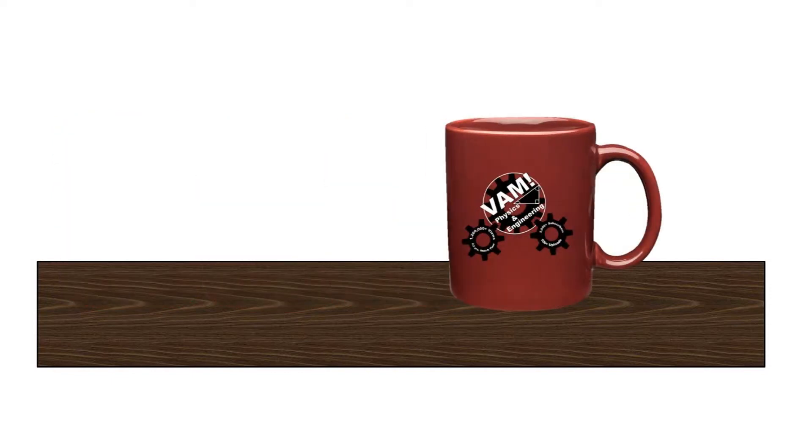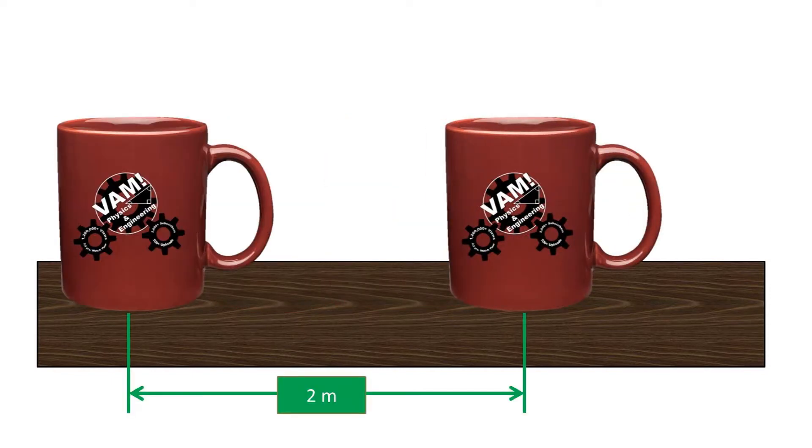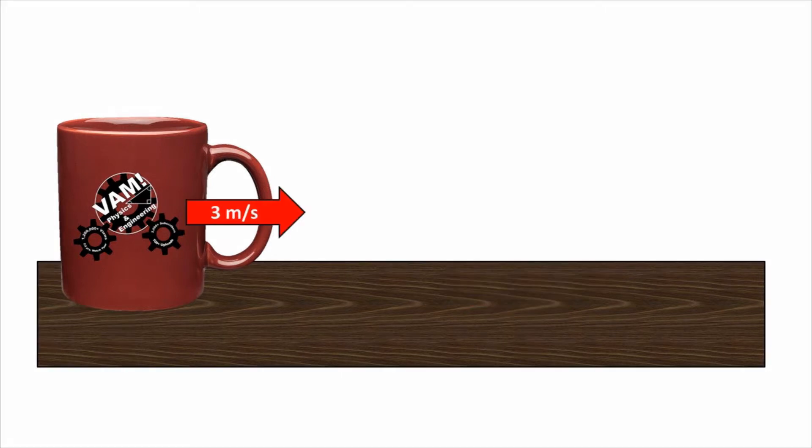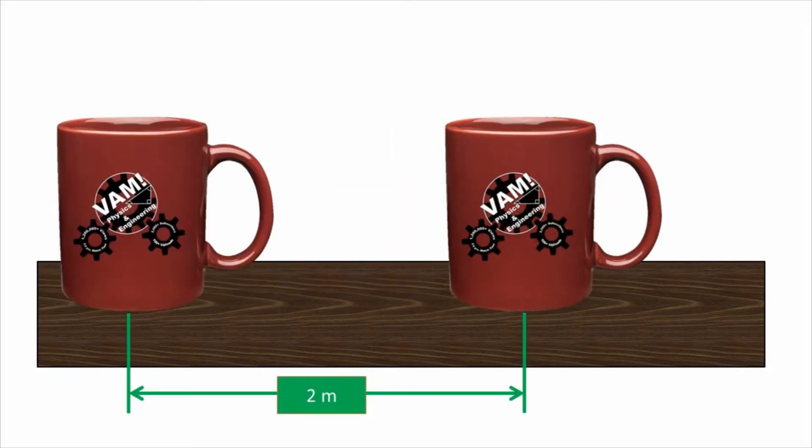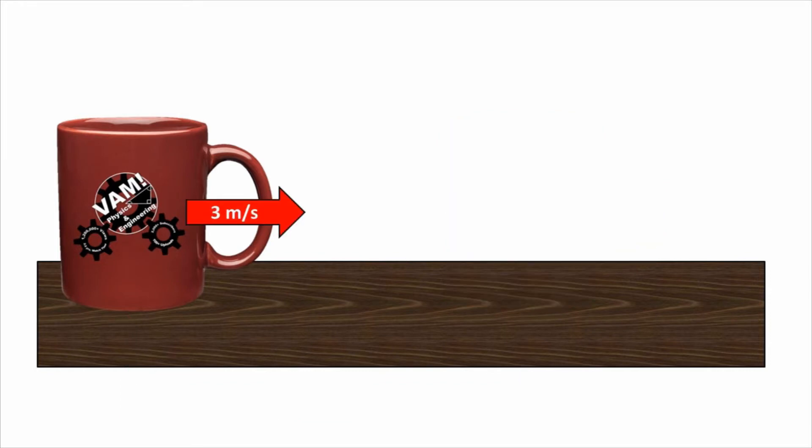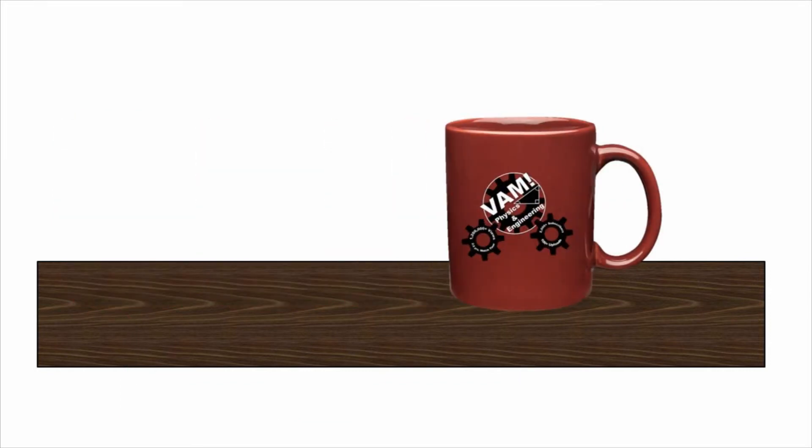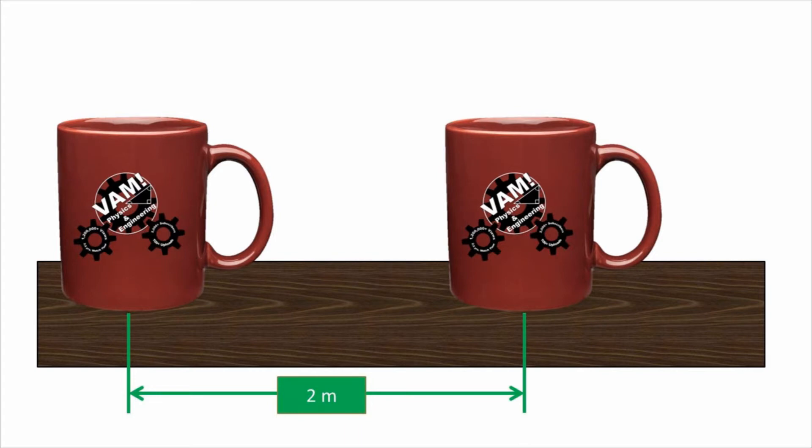In this problem, we have a coffee cup sliding across a wooden surface. It has an initial velocity of 3 meters per second and travels for 2 meters before coming to rest. We want to find out how long it takes the cup to travel the distance and the deceleration rate of the cup.